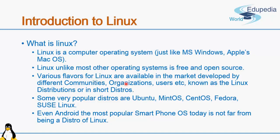Various flavors of Linux are available since it is an open source operating system — everyone has tried to modify it. Various big organizations and communities have developed their own versions of Linux. These flavors are also known as Linux distributions, but are most popularly known as Linux distros. Some very popular Linux distros are Ubuntu, MintOS, CentOS, Fedora, and SuSE Linux. Apart from that, you have Android, which is the most popular smartphone operating system today, and Android is also based on Linux — so you can say Android is also a distro of Linux.